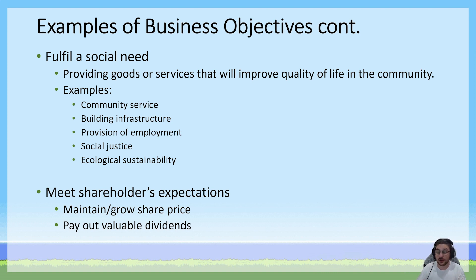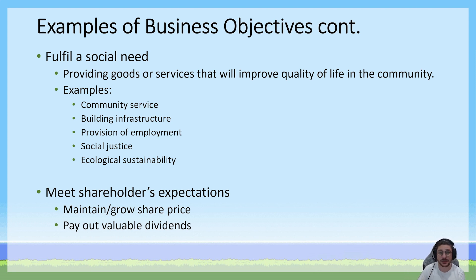Reducing your business's negative impacts on the environment, or introducing positive changes for environmental sustainability, also falls under fulfilling a social need. Meeting shareholder expectations is another objective. If your business is an incorporated company — private limited or publicly listed — your shareholders are going to have expectations. They want the value of their investment to increase, they want valuable dividends, and if they've invested in a social enterprise, they want to see social needs fulfilled as a priority. Meeting those expectations is very important.